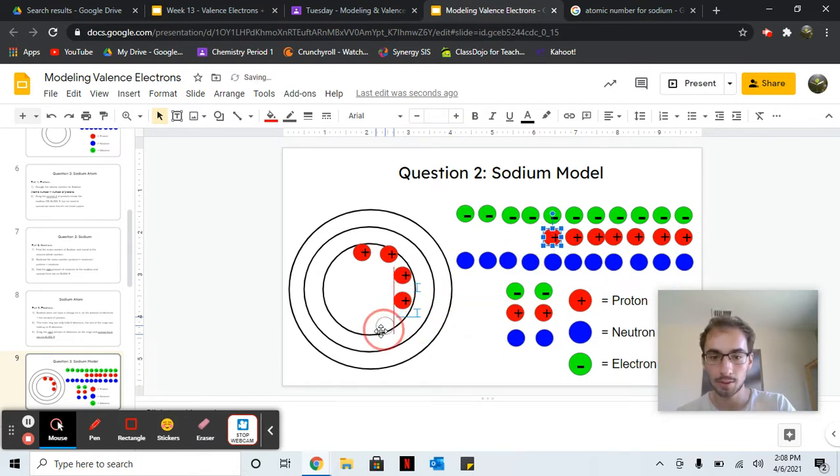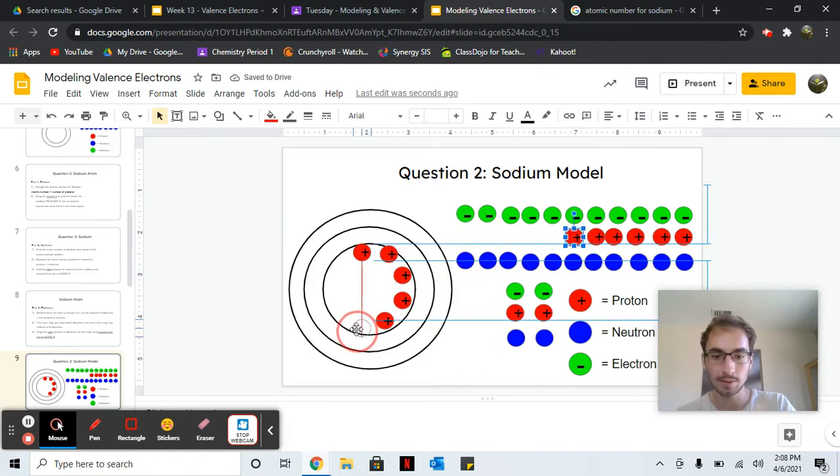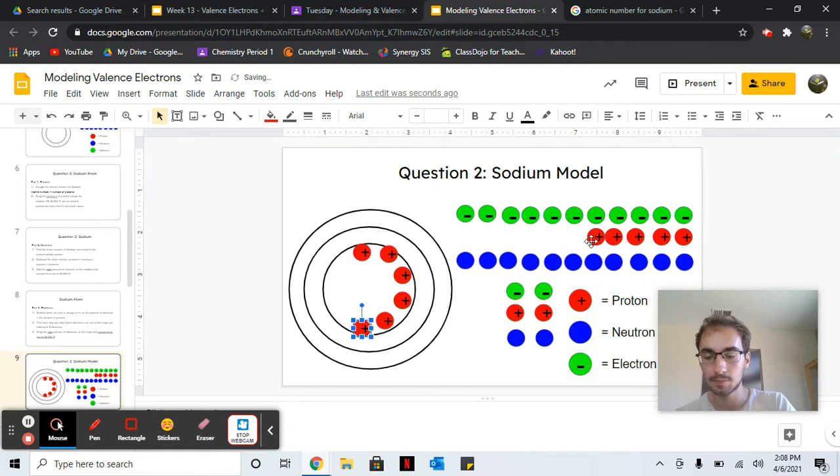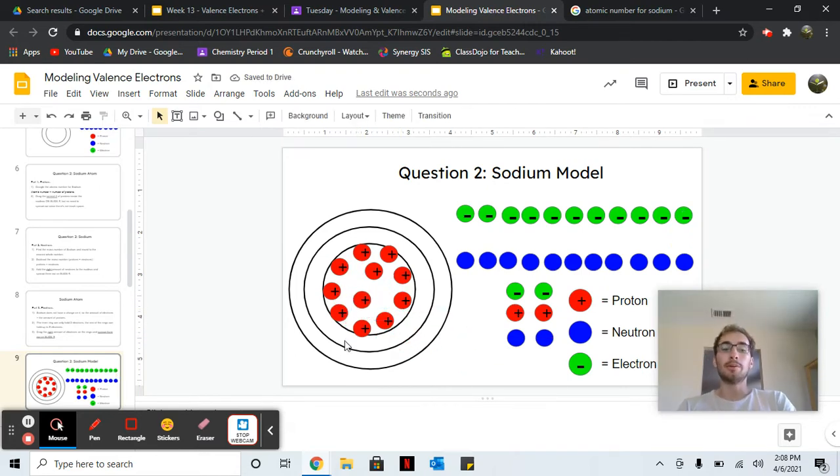So, all 11 protons: four, five, six, seven, eight, nine, ten, eleven. Okay.